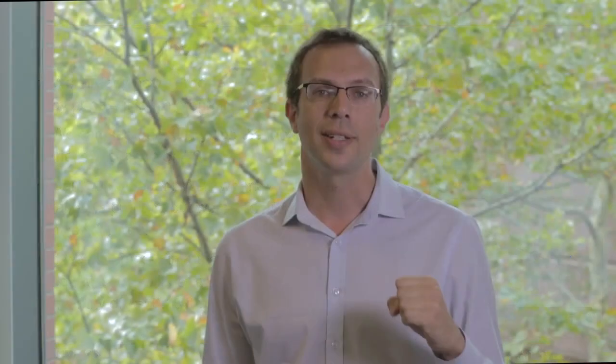So in this example, what I tried to show you is that we can change the price to increase or decrease the quantity sold. Our goal was to maximize the quantity we sell, and the model was the graph and the regression equation that Professor Iyengar showed you. A lower price increases the quantity.